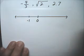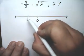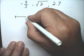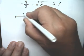And this is negative 1. So negative 4 thirds is a little bit less than negative 1, because 3 thirds would be 1. So negative 4 thirds is right there.